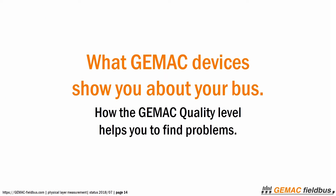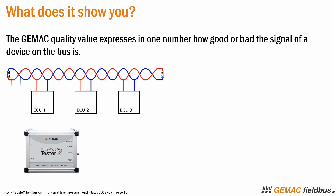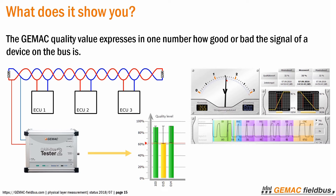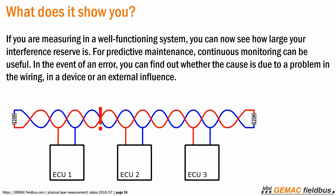What GAMAC devices show you about your bus, and how the GAMAC quality level helps you find problems. The GAMAC quality value expresses in one number how good or bad the signal of a device in the bus is. If you are measuring in a well-functioning system, you can now see how large your interference reserve is. For predictive maintenance, continuous monitoring can be useful. In the event of an error, you can find out whether the cause is due to a problem in the wiring, in a device, or an external influence.